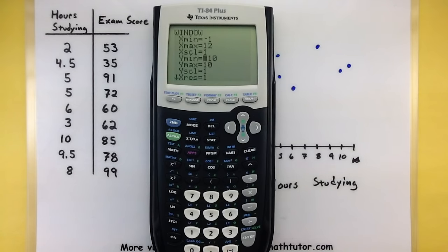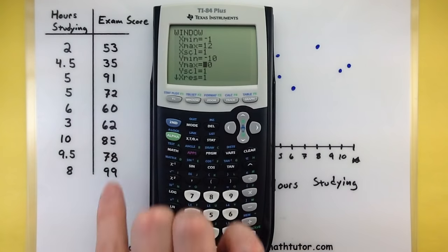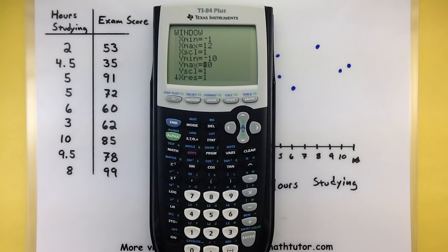For our y values, let's do a y minimum at negative 10, y maximum. Let's see, I know nothing's over 100, but let's go ahead and go up to 120. This one will also be a little bit easier to read if every single tick mark equals a value of 10. It's looking pretty good.